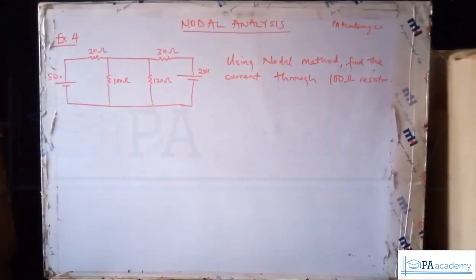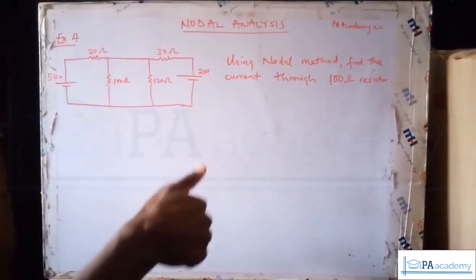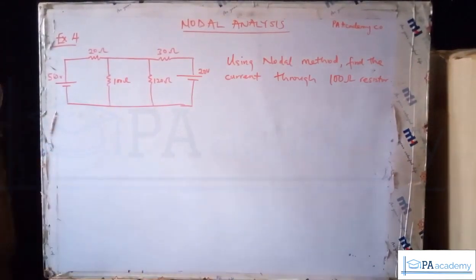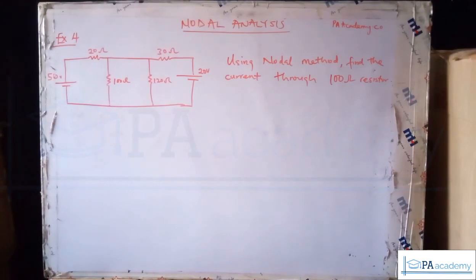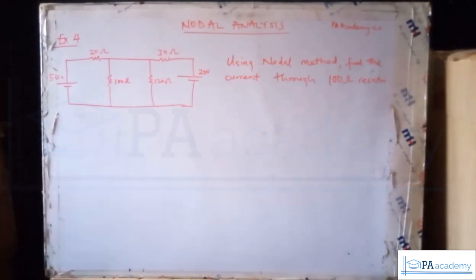The first thing to do is identify the nodes. Unlike the previous example where the question itself indicated the nodes, this one does not. So let's identify the nodes. Take a closer look at the circuit and note how many nodes we have, including the reference nodes. The question looks simple but can be very tricky, so look at it closely.